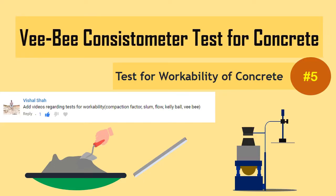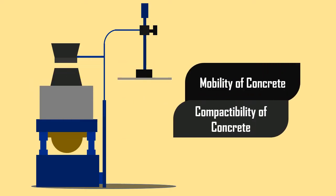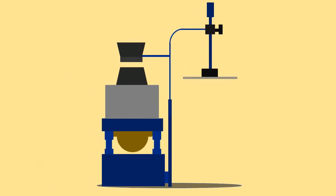The VB consistometer test is used to determine the mobility and compactability of concrete. The VB consistometer test consists of a vibrator table resting upon elastic supports,